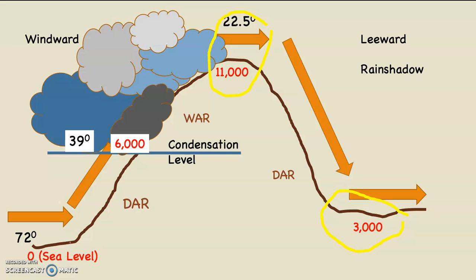Now the air is going to descend the leeward side of the mountain, dropping down from 11,000 feet to 3,000 feet — that inland leeward side valley. That's 8,000 feet of descent. Every time the air descends, we use the DAR, 5.5 degrees Fahrenheit per thousand feet. Therefore, we take 5.5 times 8 for 8,000 feet, which is 44.